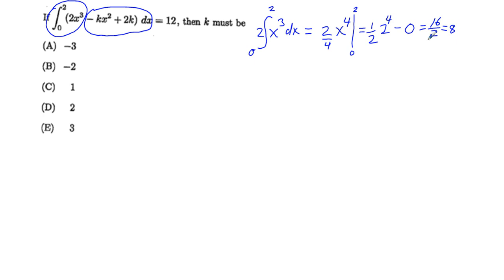Therefore, since we know that this part is 8, we know that the remaining portion, this integral from 0 to 2 of negative kx squared plus 2k dx, is going to have to equal what is left over, which would be 4. And so now we can go about solving an equation for the integral once we have this.